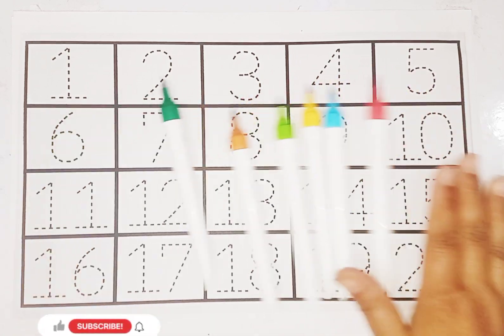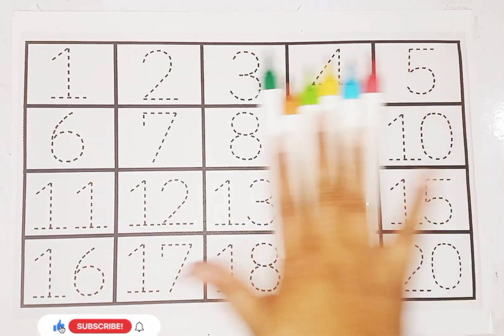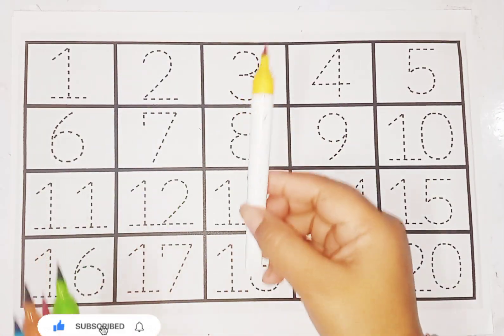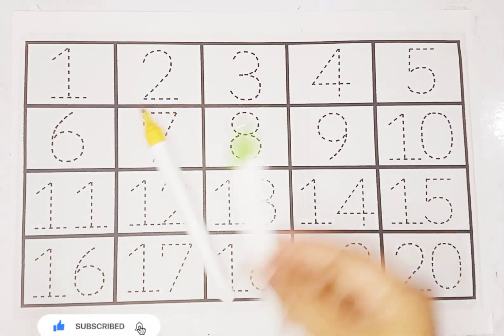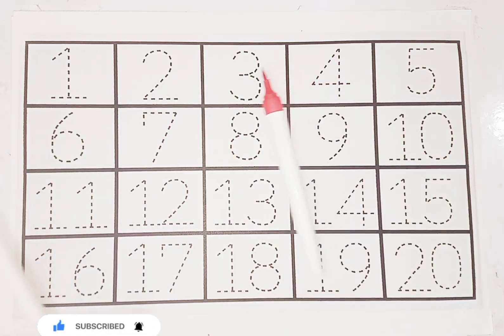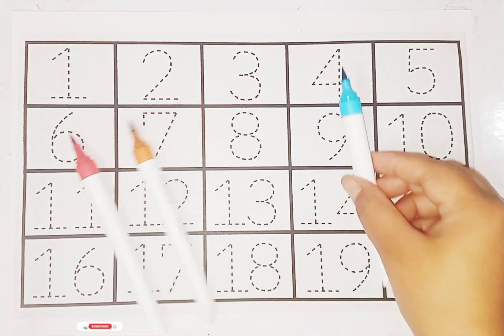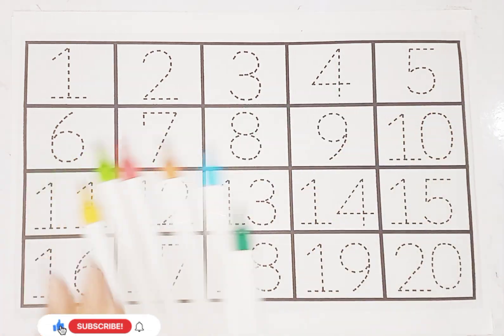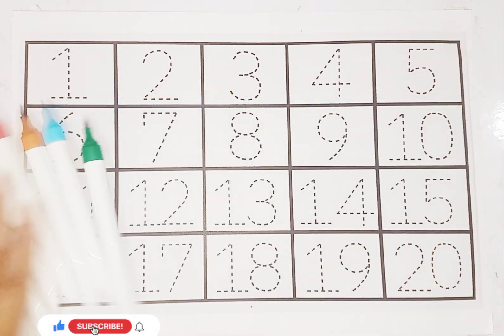These are colors, cute cute colors. Let's learn some colors name. This is yellow color, light green color, red color, brown color, sky blue color, dark green color. These are colors.